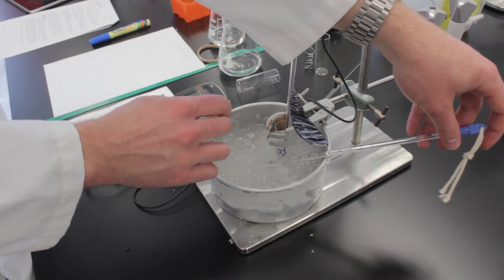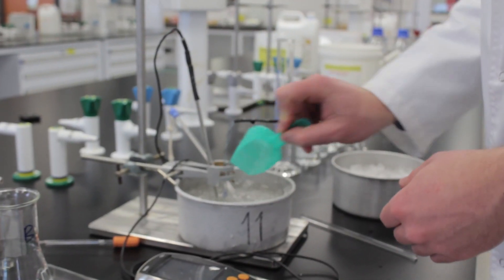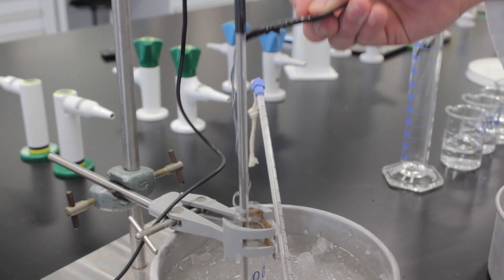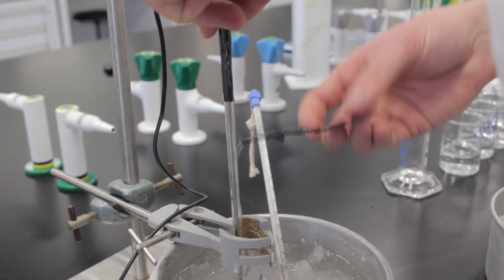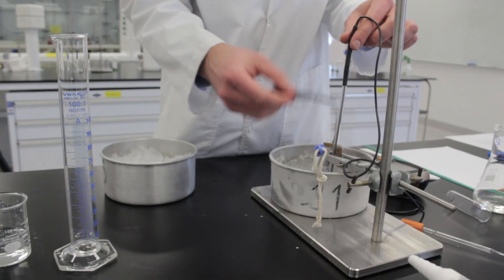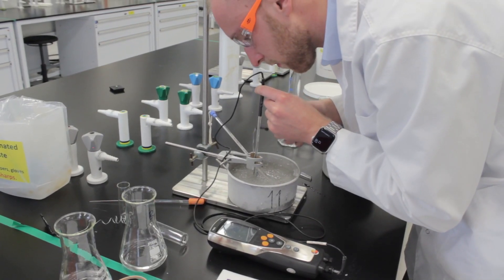Make sure that the ice bath is at the correct temperature and add more pool salt if necessary. Start mixing the solution by moving the wire thingy up and down vigorously. It should take a few minutes for the solution to start freezing. Keep an eye on the thermometer.